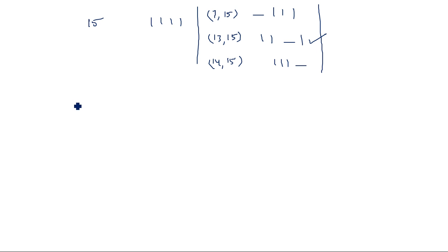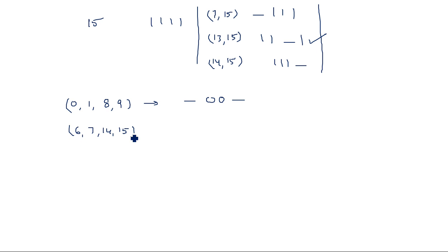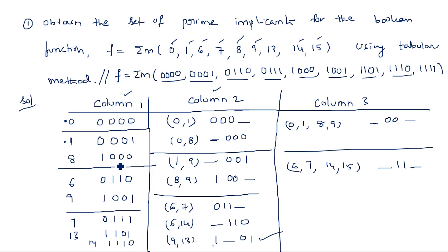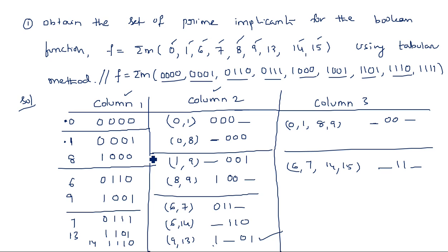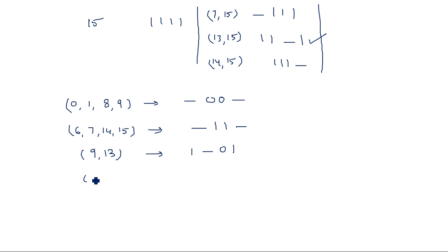So the prime implicant groups and their expressions are: (0,1,8,9) → -00-, (6,7,14,15) → -11-, (9,13) → 1-01, and (13,15) → 11-1. Here A, B, C, D are the variables. A dash means that variable is eliminated.